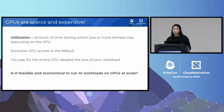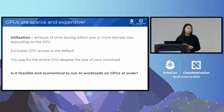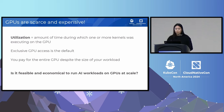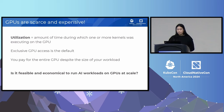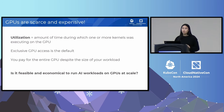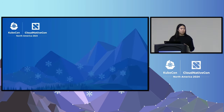GPU utilization is the amount of time during which one or more kernels are executing on the GPU. By default, when Kubernetes is scheduling GPU workloads, it assigns a whole GPU to a single workload or job exclusively — this is called exclusive access. In Kubernetes, when requesting a GPU resource in the pod manifest, you have to request in whole integers, which is a different model compared to CPUs where you can request fractions. Running AI workloads on GPUs absolutely can be feasible if we implement certain strategies.